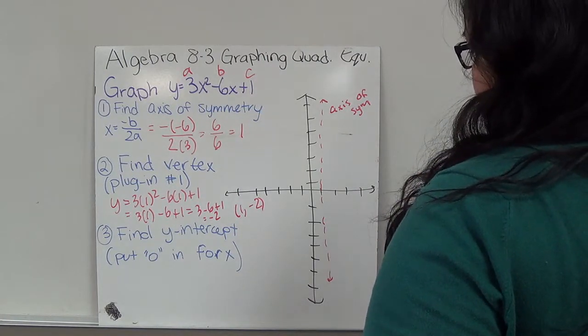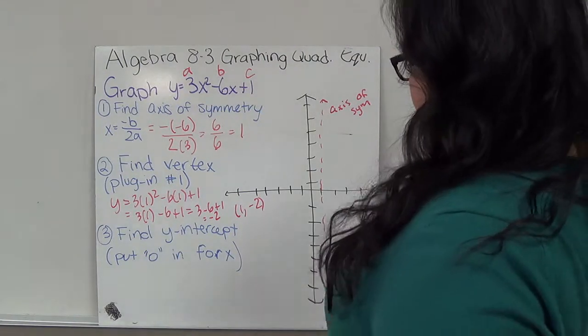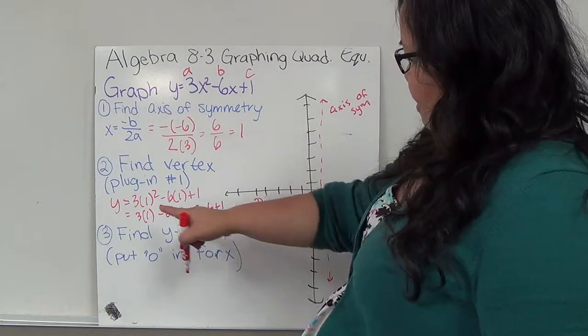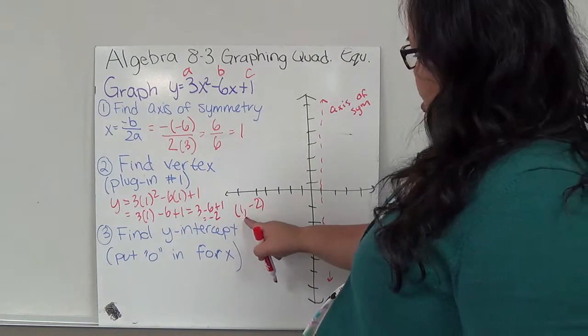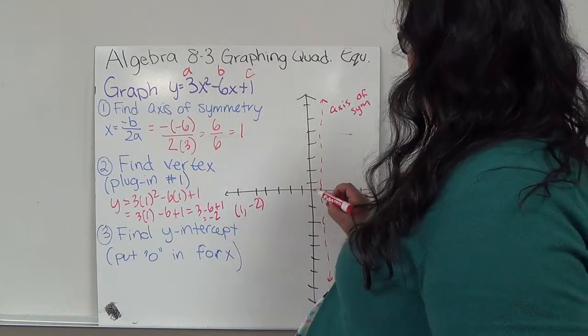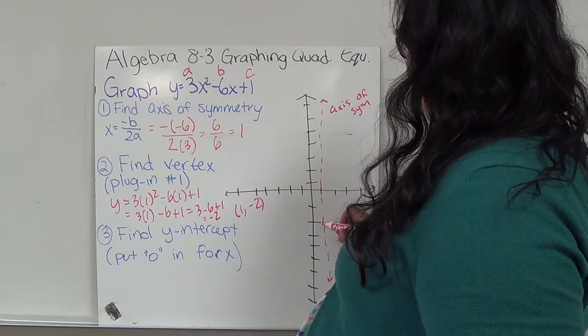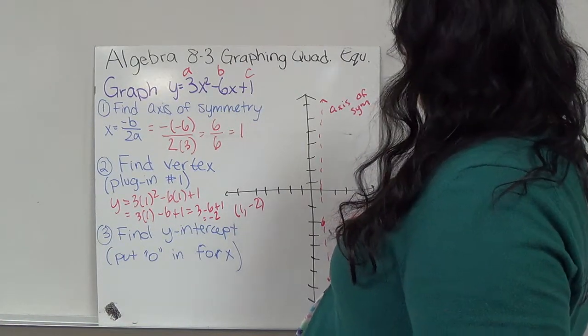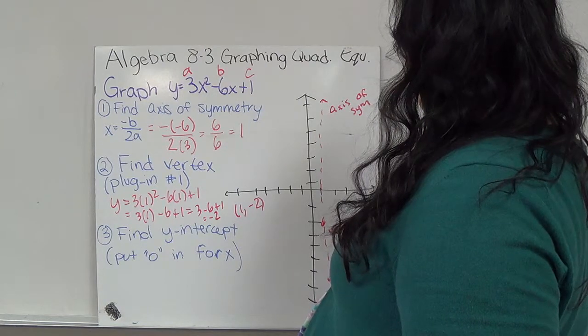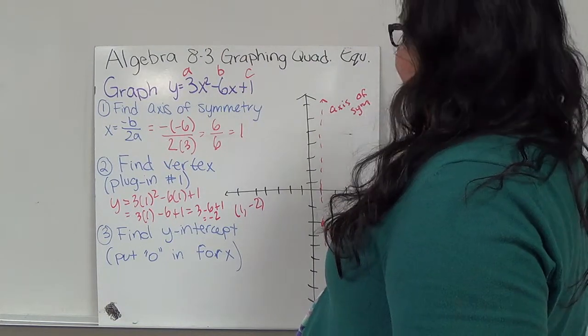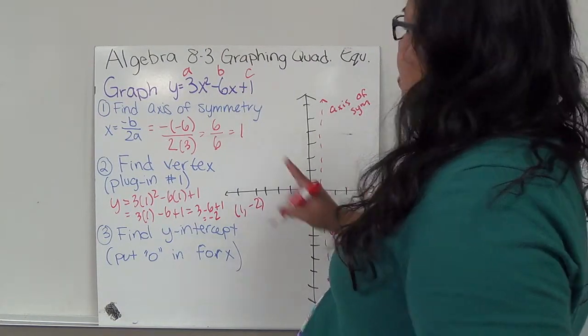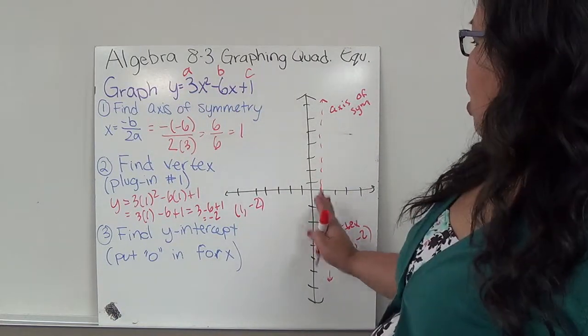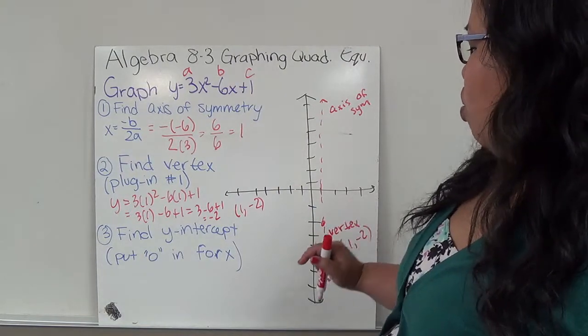So from here, I'm going to find 1, negative 2, so this is my vertex. Now, I know because this is positive that this is going to be facing up. But I need to know at least one point on each side in order to graph.